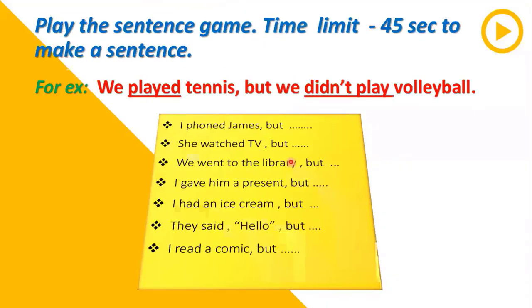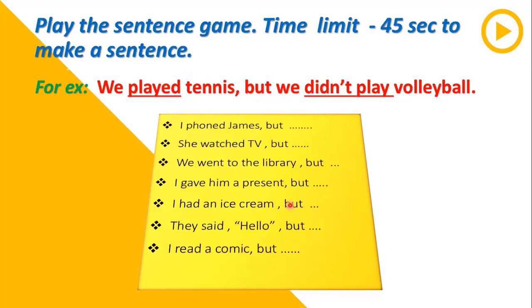Now let's play a sentence game. In this game we are given sentences that are incomplete - we have the first part and we have to continue the second part. For example: 'We played tennis but we didn't play volleyball.' The word 'play' is used twice - positively in the first part and negatively in the second part. If you want to give your own answers, stop the video before you hear mine.